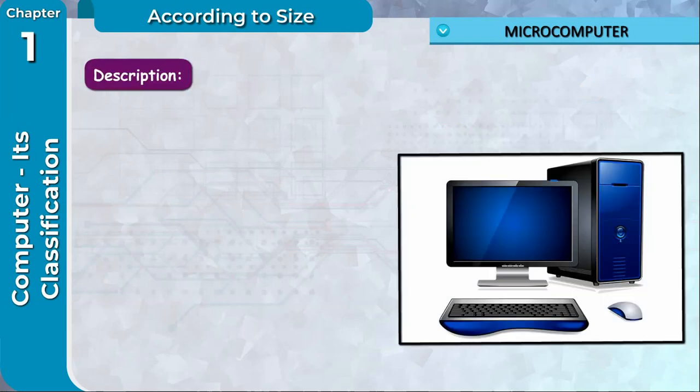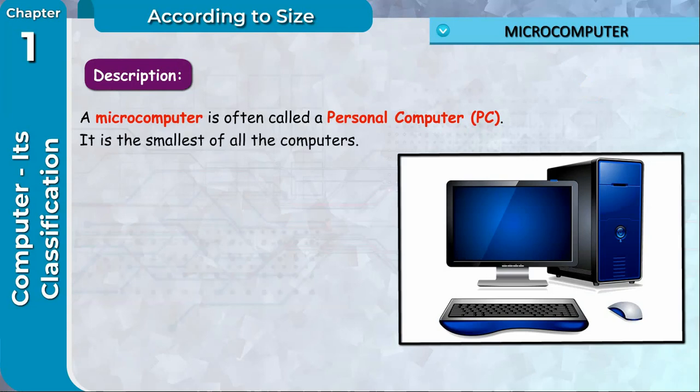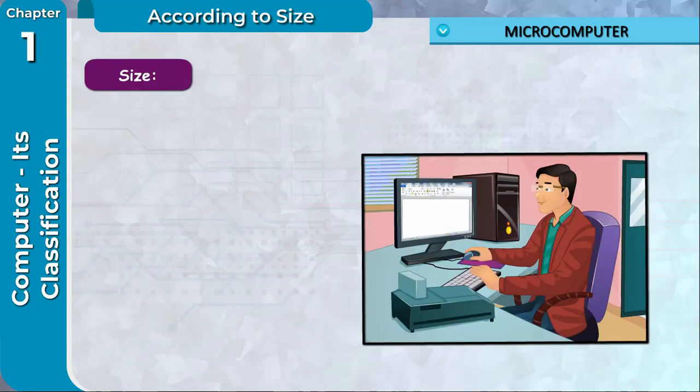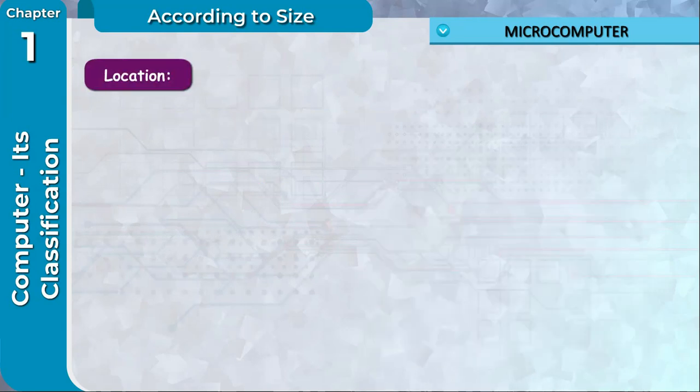Microcomputer Description: A microcomputer is often called a personal computer or PC. It is the smallest of all the computers. The most important part of a microcomputer is a microprocessor, also called its brain. Peripherals such as keyboard, mouse and monitor are parts of a microcomputer system.